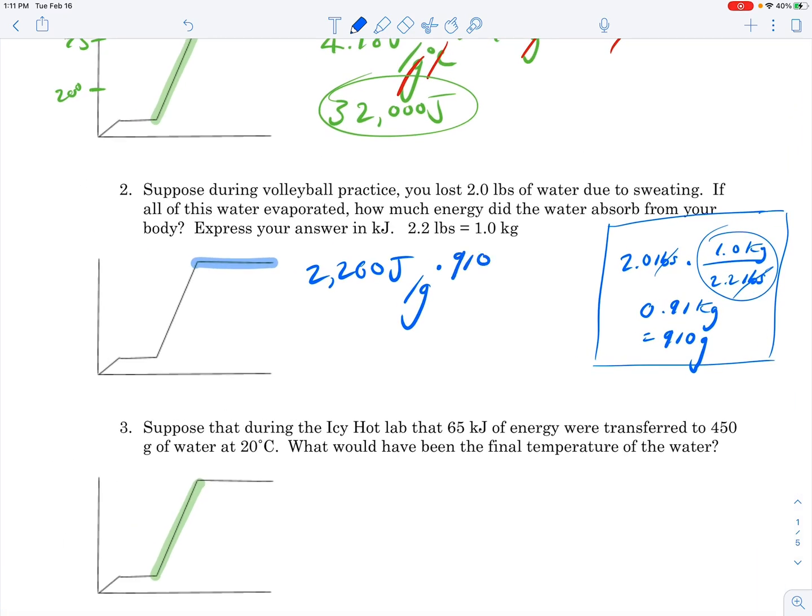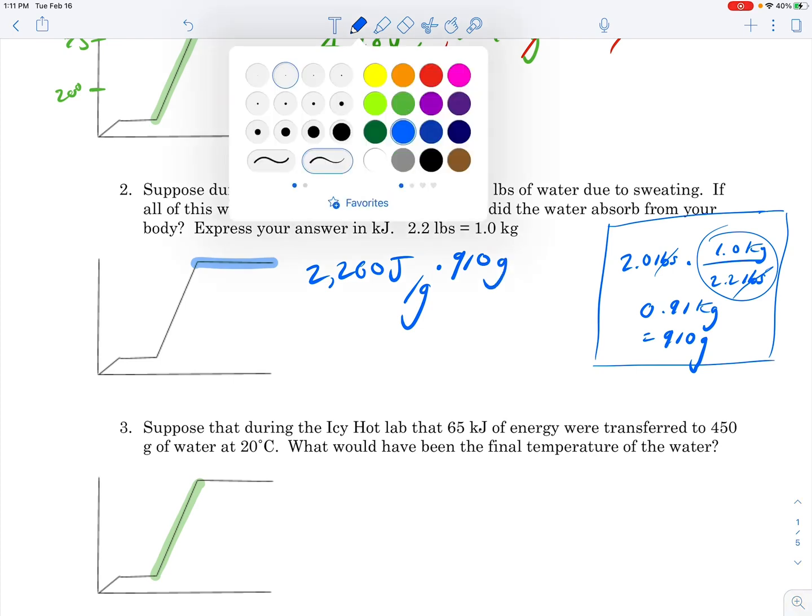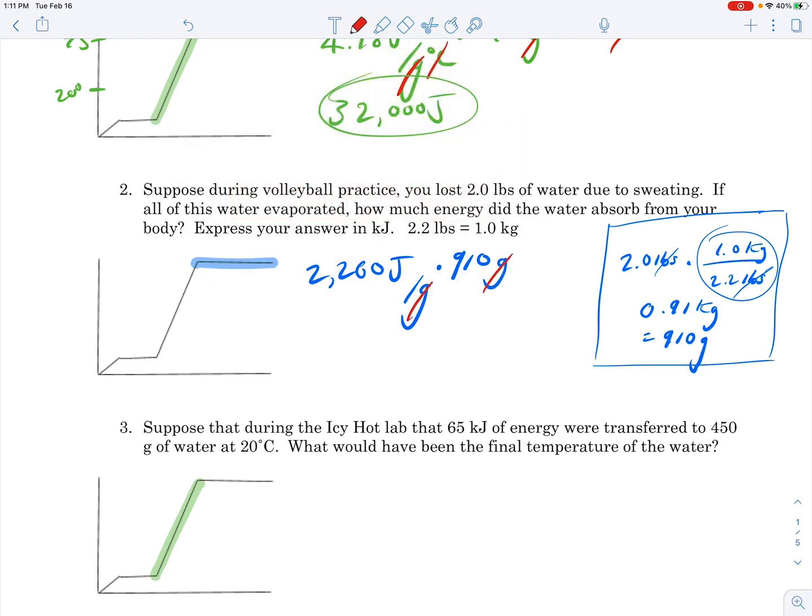I'm going to multiply that by 910 grams. You can see the grams cancel. Now we're going to do 2,260 times 910. If I put that into two significant figures, it's 2,100,000 joules. They said put it in kilojoules. A kilojoule is 1,000 joules, so if I put that in kilojoules, I'm just going to divide that number by 1,000, which is 2,100 kilojoules.